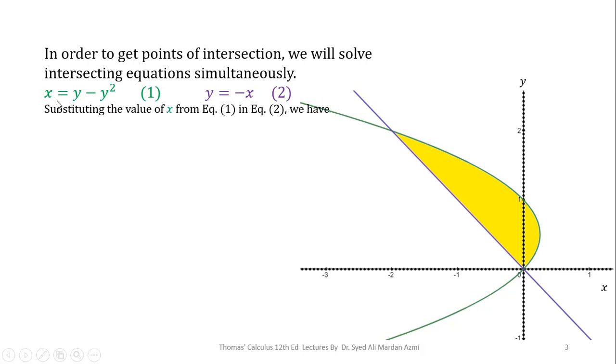For simultaneous solution, we will substitute the value of x from equation 1 in equation 2. We have y = -(y - y²), converting into standard form we get y² - 2y = 0. Taking y common, we have y(y - 2) = 0. When product of two terms is equal to 0, either first equals 0 or second equals 0. So, from this concept, we have y = 2 and y = 0.